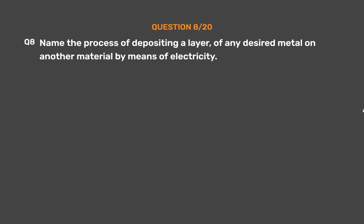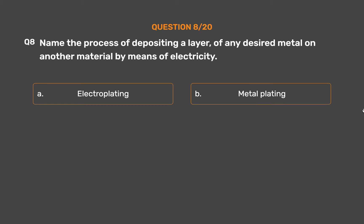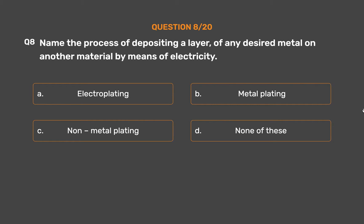Question No. 8: Name the process of depositing a layer of any desired metal on another material by means of electricity. Option A: Electroplating. Option B: Metal plating. Option C: Non-metal plating. Option D: None of these.